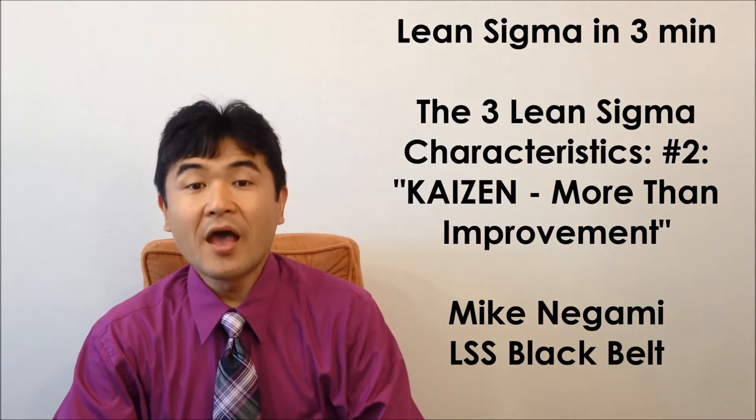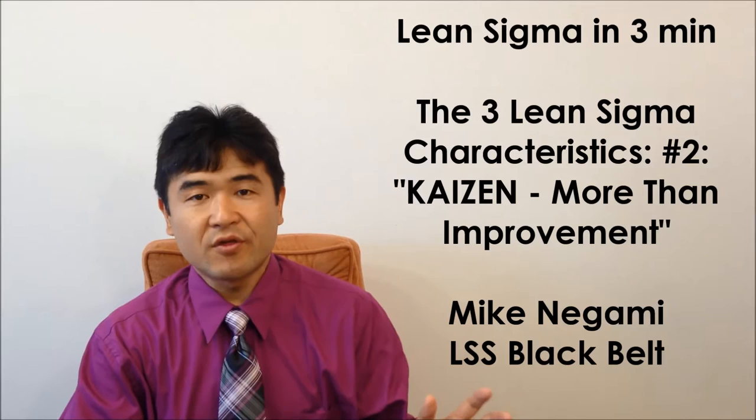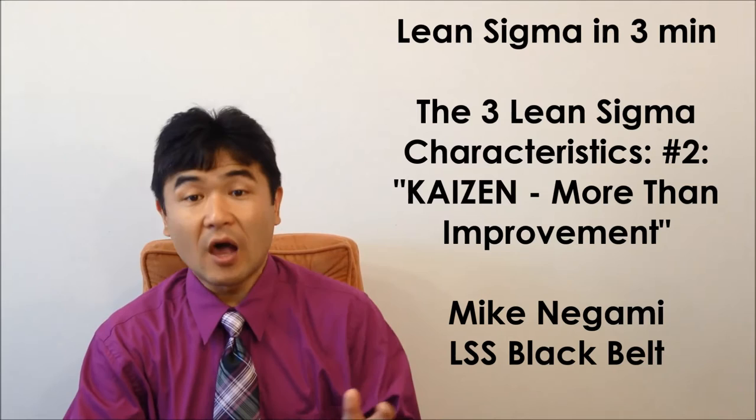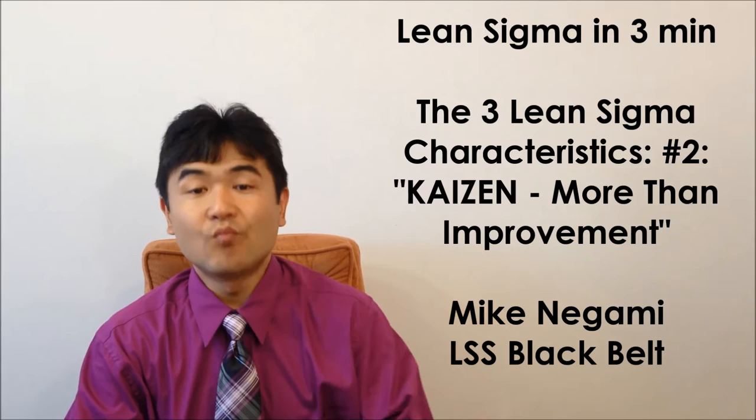Hi, this is Mike Negami, Lean Sigma Black Belt. This episode is about the second Lean Sigma characteristics that we must always be aware of during any Lean Sigma activities. The title is Kaizen, more than improvement.